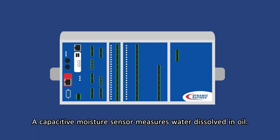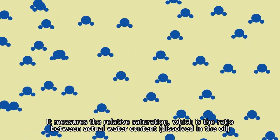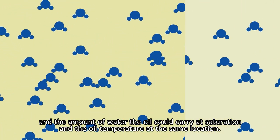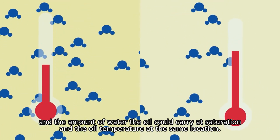A capacitive moisture sensor measures water dissolved in oil. It measures the relative saturation, which is the ratio between actual water content dissolved in the oil and the amount of water the oil could carry at saturation and the oil temperature at the same location.